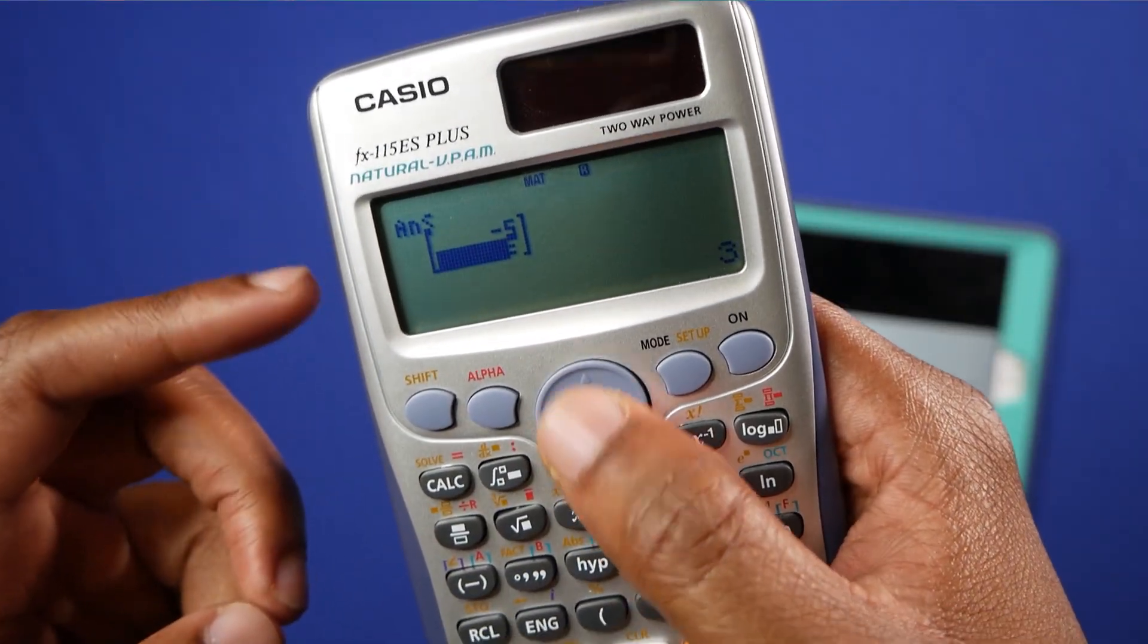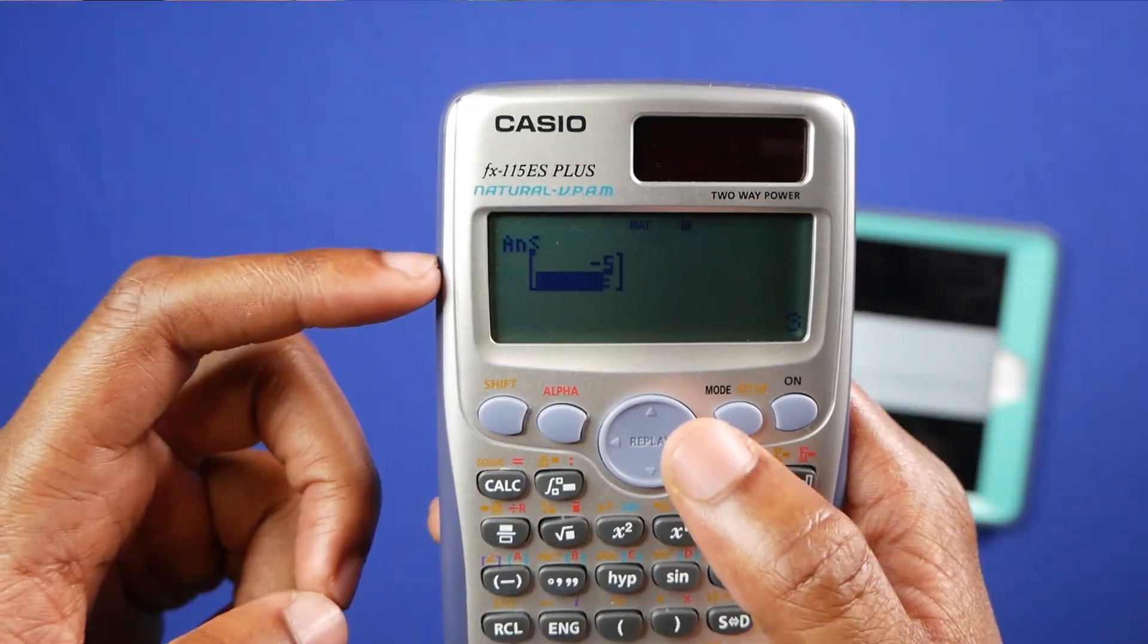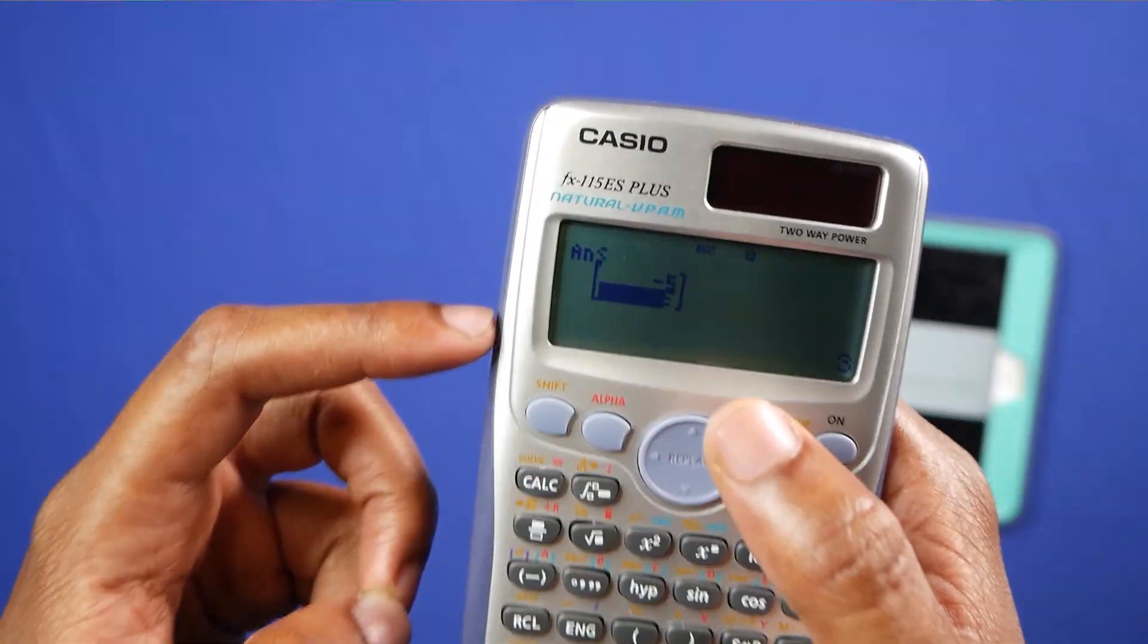Now multiply the inverse of the first matrix by the second matrix. And you get your answer in matrix form. We just solved a simultaneous equation in matrices here, people.